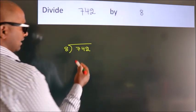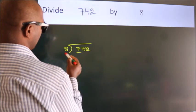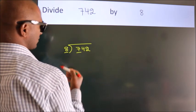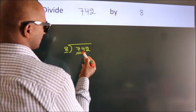Next, here we have 7, here 8. 7 is smaller than 8, so we should take two numbers: 74.